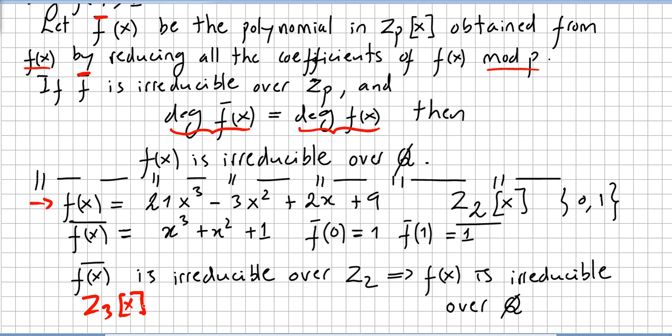Because modulo 3, 21 modulo 3 is 0, right? So you're not going to get a polynomial of the same degree. The degree of f̄ is going to be different from the degree of f.